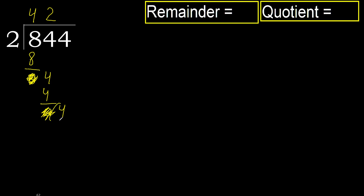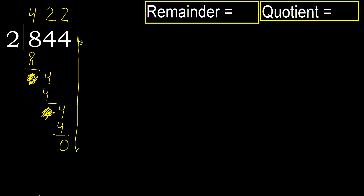Ok. Bring down 0. 2 multiplied by 2 is 4, is not greater. Ok. Subtract. Next. That is not a greater number, therefore finish it.